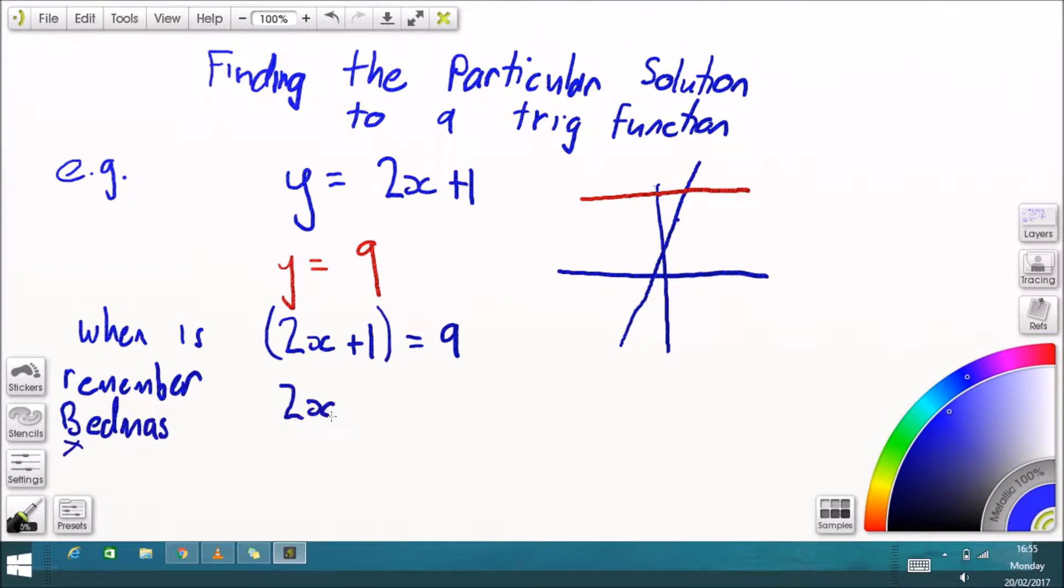All we have to do is remember BEDMAS. Set brackets is the thing we do last, so to work backwards from the plus 1 we have to minus 1, to work backwards from the times by 2 we have to divide by 2, and that leaves us with x equals 4. So when is 2x plus 1 equal to 9? Well, when x is equal to 4.